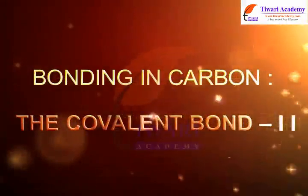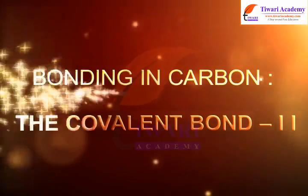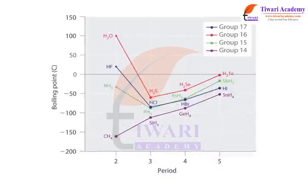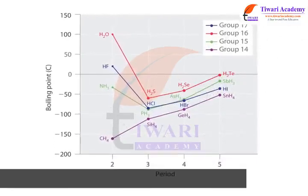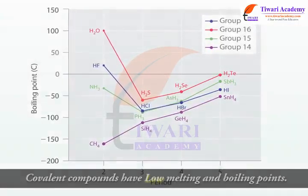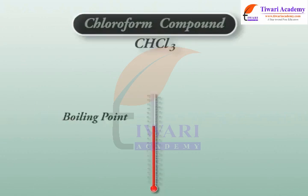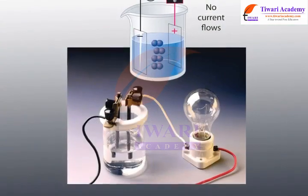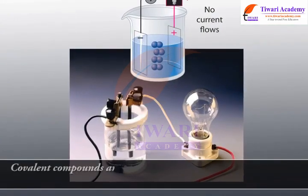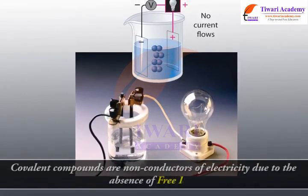Bonding in carbon: the covalent bond, part 2. Covalent compounds have low melting and boiling points. For example, chloroform has a boiling point of 60 degrees centigrade. Covalent compounds are non-conductors of electricity due to the absence of free ions.